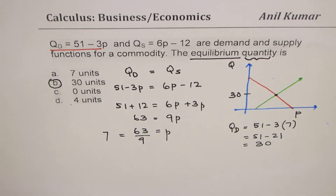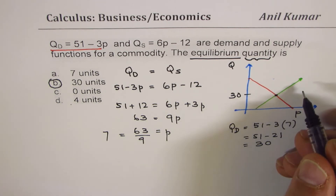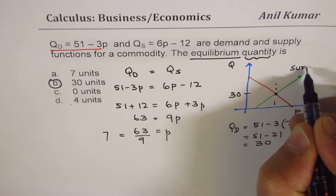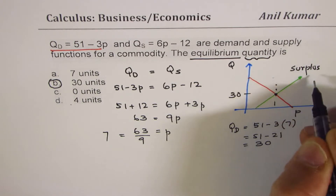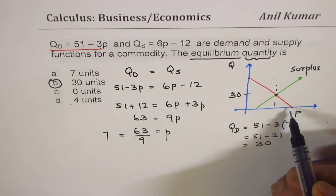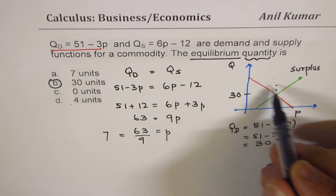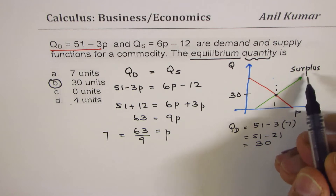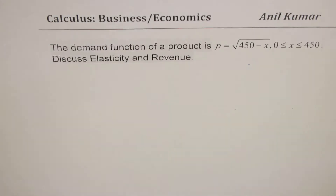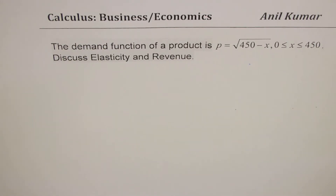There could be more things asked here — for instance, when is there a surplus? Beyond the equilibrium point, suppliers have supplied a lot of material since the price is high, but there are no consumers to buy it, so we have a surplus in the market. Now let's move on and talk about elasticity and revenue.